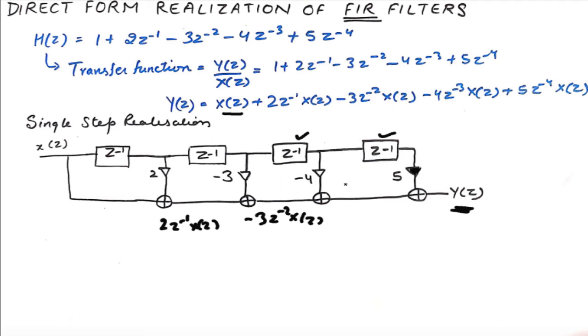So the realization of FIR filters is super easy. You simply take one input X of Z and pass it through subsequent delays to generate all the other X of N terms to get Y of Z.